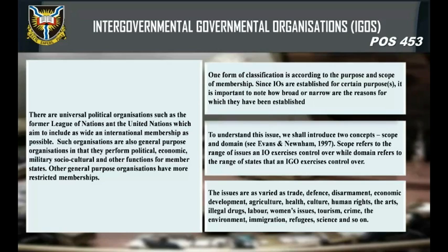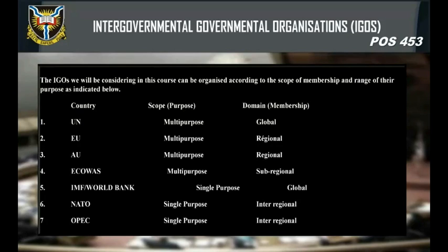One form of classification is according to the purpose and scope of membership. Since IOs are established for certain purposes, it is important to note how broad or narrow are the reasons for their establishment. Two concepts are introduced: scope and domain. Scope refers to the range of issues an IO exercises control over, while domain refers to the range of states that an IGO exercises control over. The issues are as varied as trade, defense, disarmament, economic development, agriculture, health, culture, human rights, the arts, illegal drugs, labor, women's issues, tourism, crime, the environment, immigration, refugees, science, and so on.